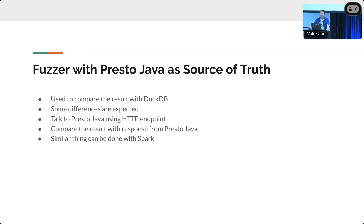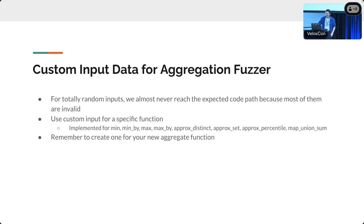The way we do it: we spawn a Presto Java separate process, talk to its endpoint with a query and data, get back the result, parse the Presto pages, and compare with what VLOGS calculated. That gives us a big boost of confidence. We also have more control over the input data for fuzzers — before, we uniformly randomly generated over the whole universe, meaning most of the time the input was invalid and we weren't testing actual code paths. Now we have customized input generation, like 20% invalid input and 80% valid input, and we implement this for a list of aggregate functions.